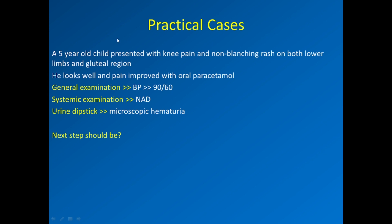Practical case 1: A five-year-old presented with knee pain and a non-blanching rash on both lower limbs and gluteal region. He looks well and pain improved with oral paracetamol. Blood pressure 90/60, systemic examination no abnormality detected, urine analysis shows only microscopic hematuria. The next step: discharge with advice and follow-up — no need for consultation or admission.